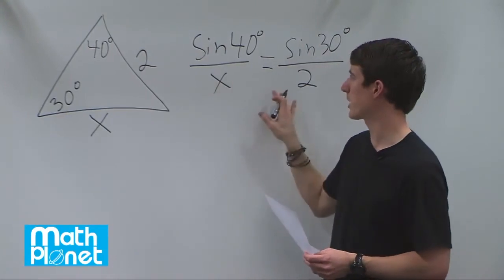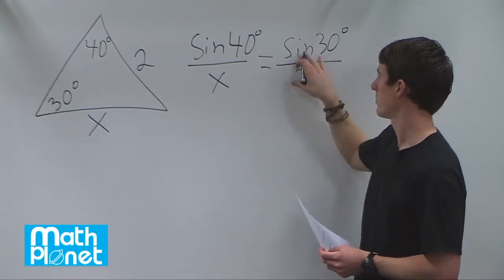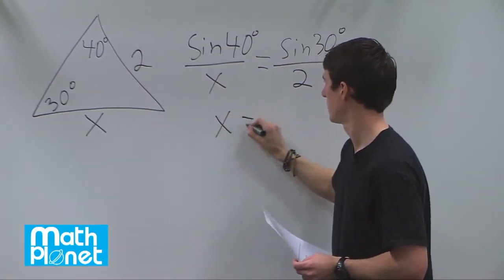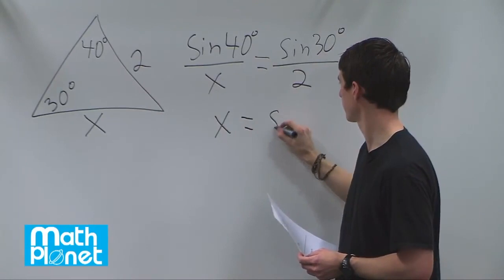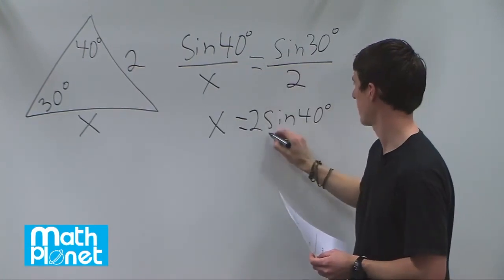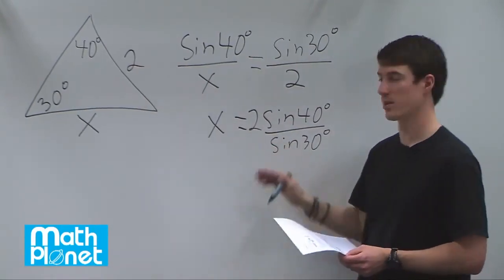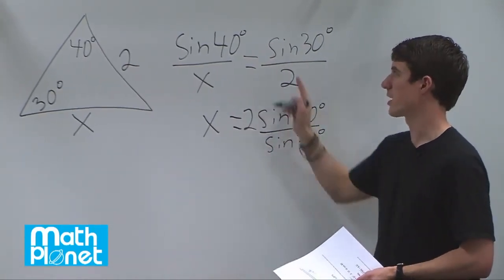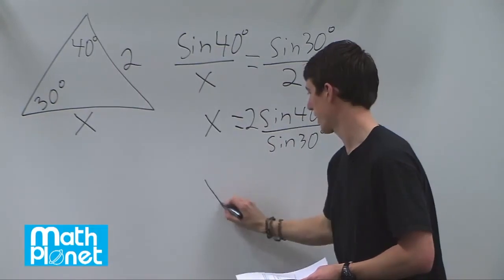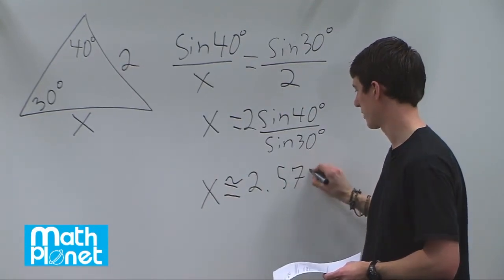We solve for x algebraically: multiply both sides by x, then multiply by 2 and divide by sine of 30. This gives x equals 2 times sine of 40 degrees divided by sine of 30 degrees, which comes directly from the law of sines. Plugging this into our calculator gives us x approximately equal to 2.571.